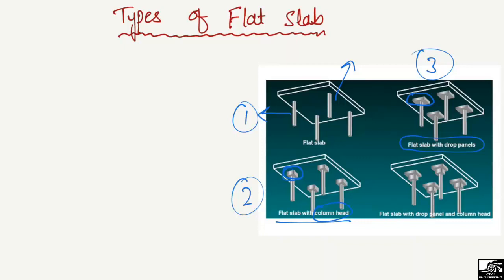The fourth one is the combination of both — the flat slab with drop panel and the column head — where we increase the slab thickness and also increase the column size, only in the region of connection between the slab and the column. So these are the different ways to increase the capacity of the column and slab and also to avoid the punching shear.